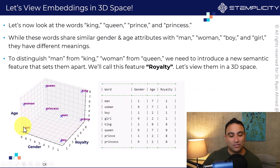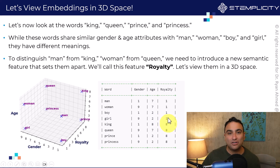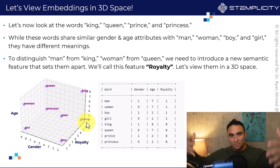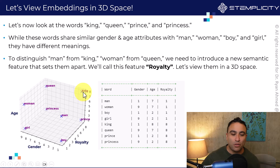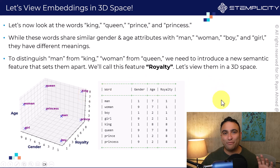Now I have age, gender — similar to before — and an additional dimension: royalty. A king is going to be represented as one and eight on gender and age, but with a higher royalty status of eight. You'll also see that queen, prince, and princess all have a royalty value of eight. The king is on the older side, so the age value is higher, and on gender it's at one — similar to the man side. That is vector embedding in a nutshell.